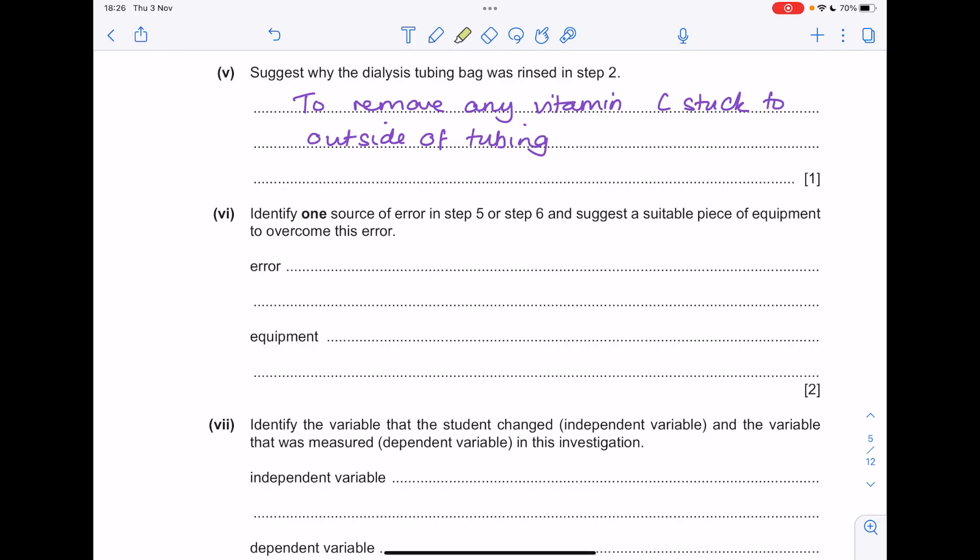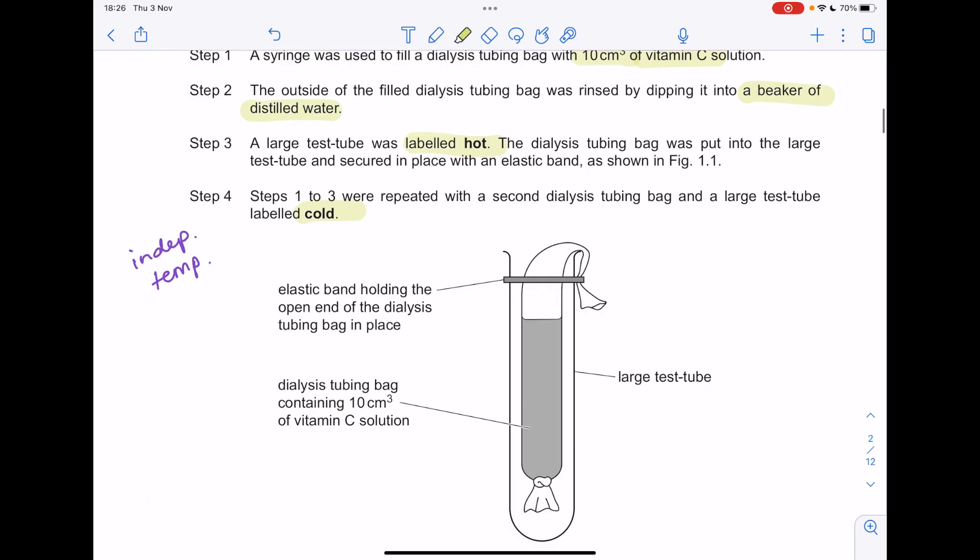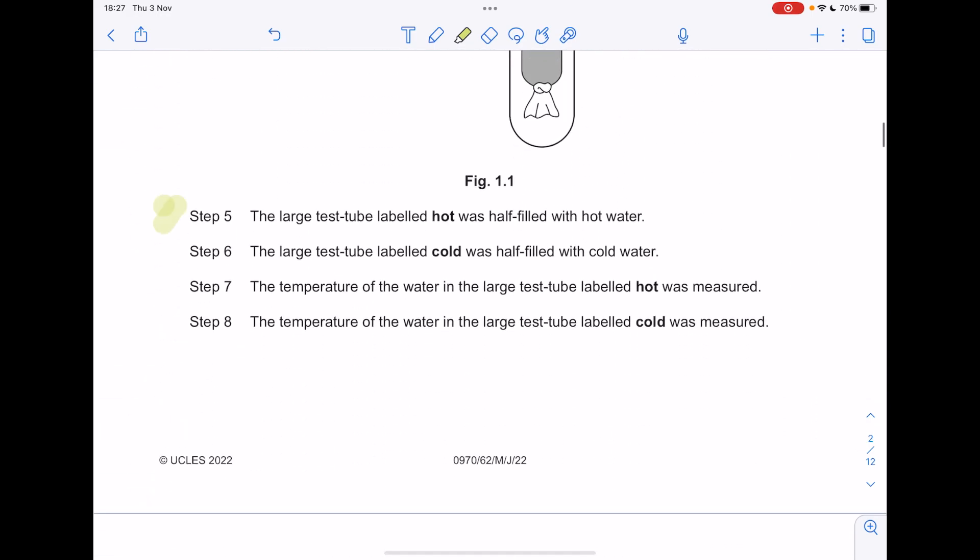Identify one source of error in step 5 or step 6 and suggest a suitable piece of equipment to overcome this error. So we're looking here, it's all very imprecise. We really need to use a measuring cylinder, burette, graduated pipette, syringe, anything like that here, because we haven't measured the volume properly.